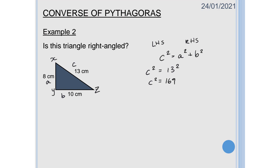For my right hand side I've got A squared plus B squared which is going to be 8 squared plus 10 squared. So I've got 64 plus 100 which is 164